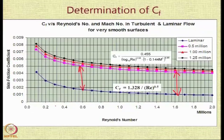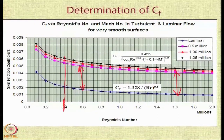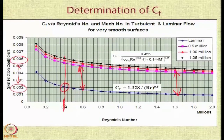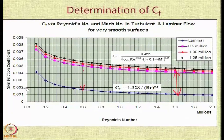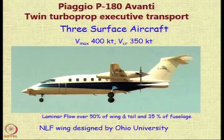For example, at a Reynolds number of around 0.4 million, you have 0.002 for laminar and 0.006 for turbulent — a factor of 3, meaning laminar is one-third of turbulent. This is a huge saving. So if you can maintain laminar flow — it is a very big 'if' — you have a chance of reducing drag to nearly one-third, and this is why many attempts are made to maintain laminar flow.